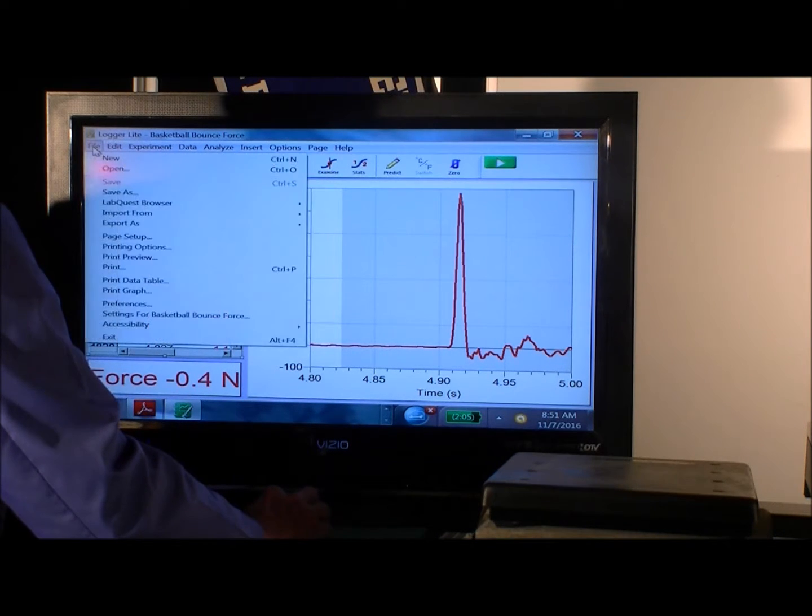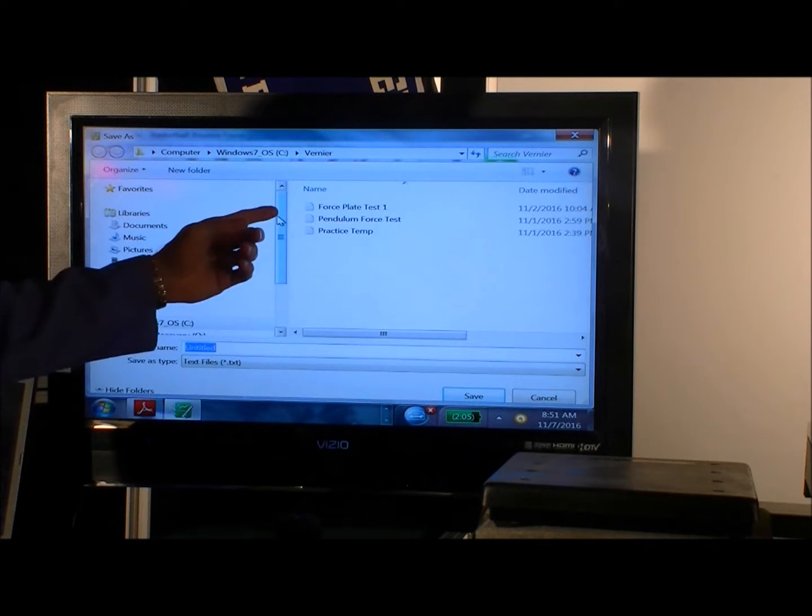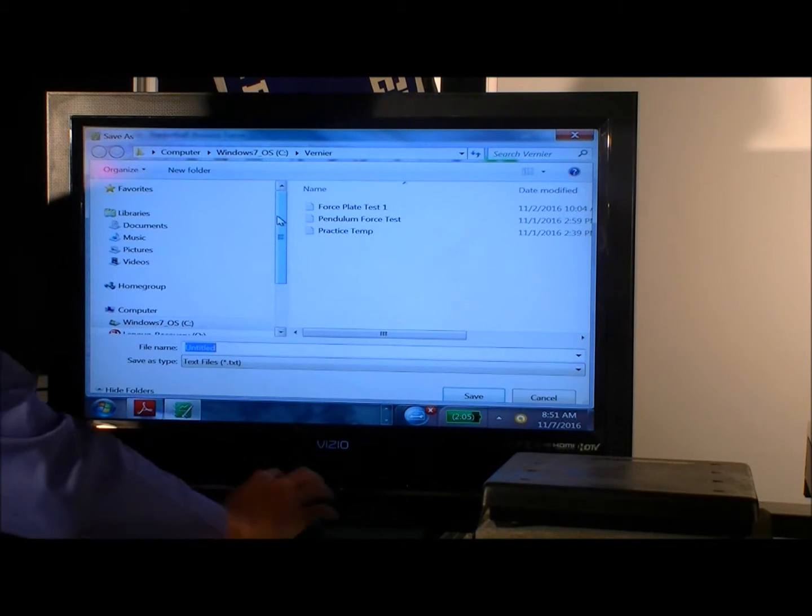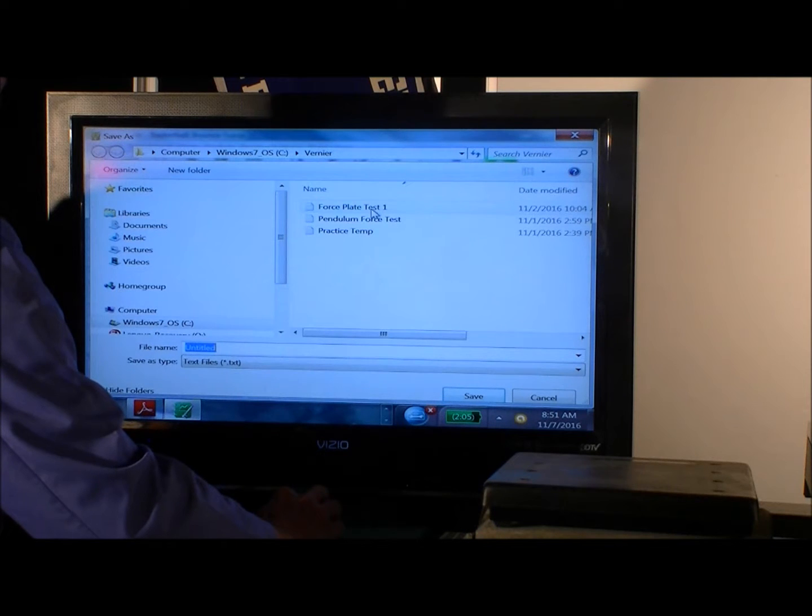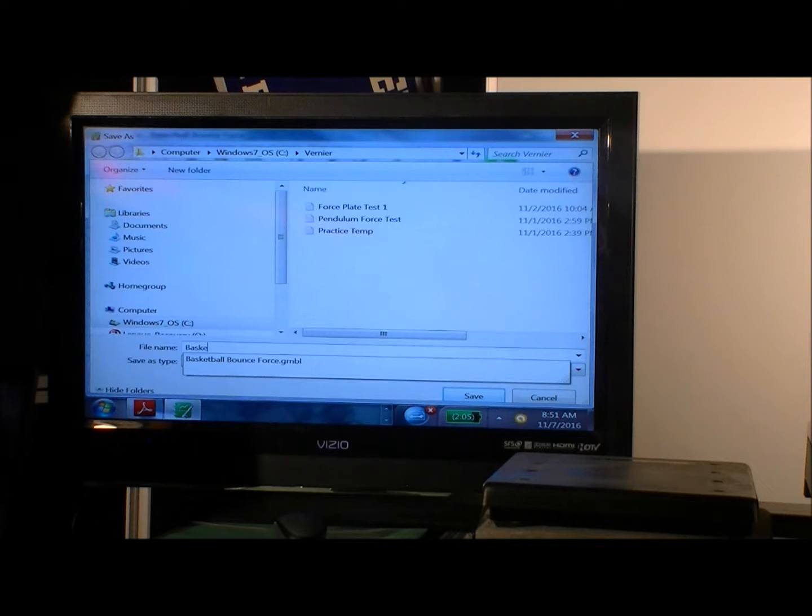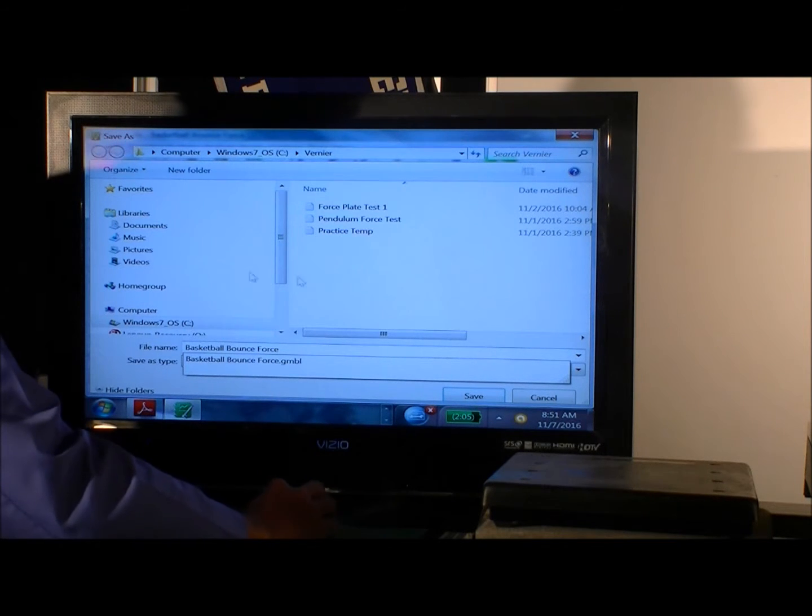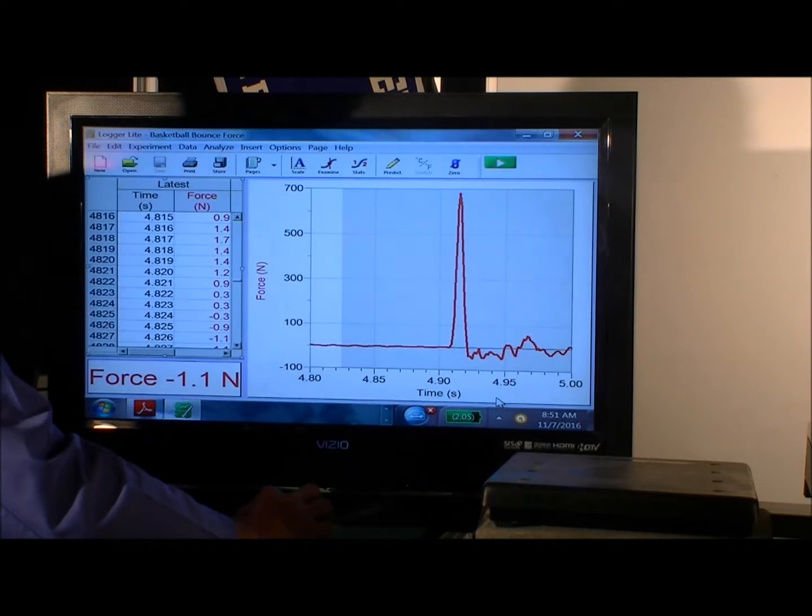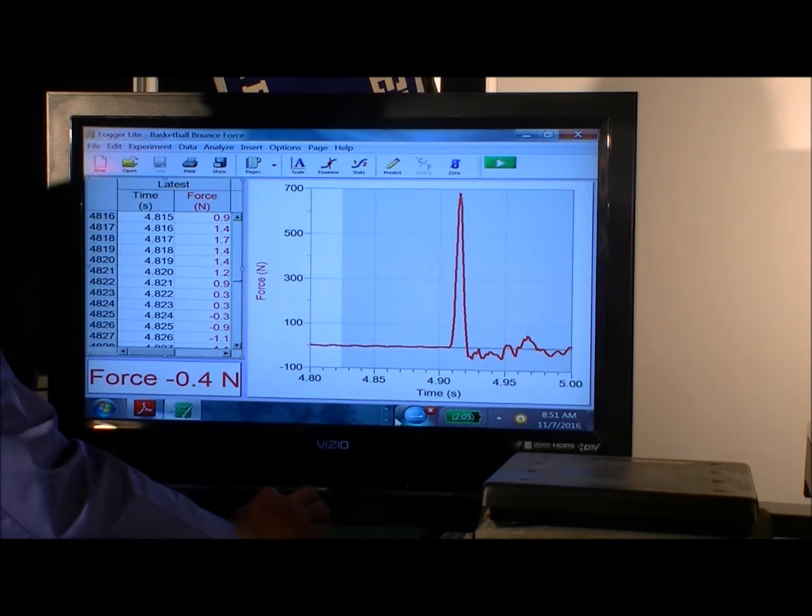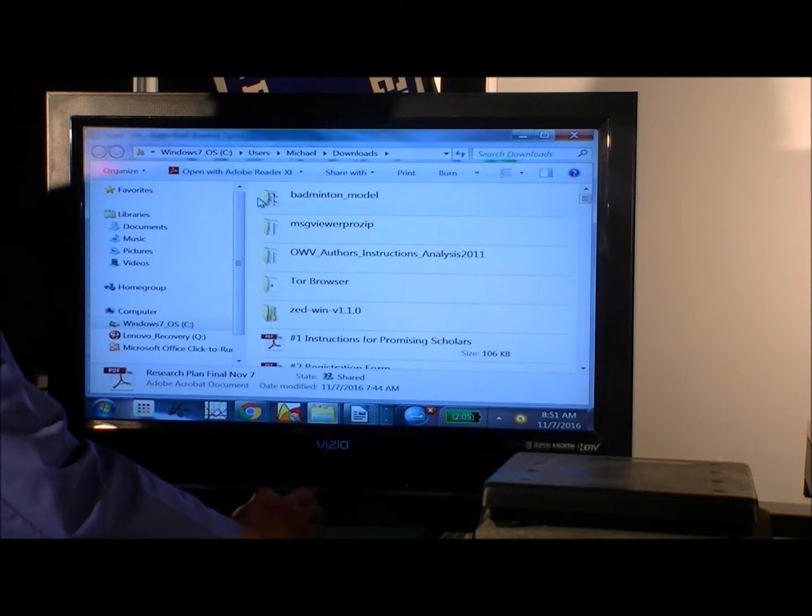And that's where we select Export Text, and we can export it as a text file. And let's go ahead and call it Basketball Bounce Force, but it'll automatically call it dot text if we don't put anything out there. And then it's kind of useful that if we say navigate over to the same spreadsheet, we've got Basketball Bounce Forces in the name of the file.